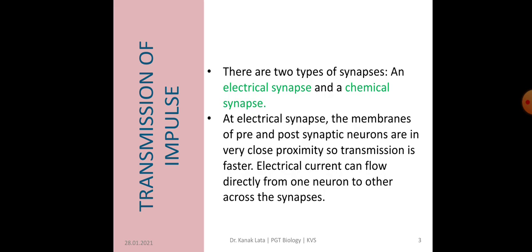Synapses are of two types, that is electrical synapse and chemical synapse. In electrical synapse, the membranes of presynaptic neuron and postsynaptic neurons are very close, so transmission of impulse is very fast. Electrical current can directly flow from one neuron to another neuron across the synapses.